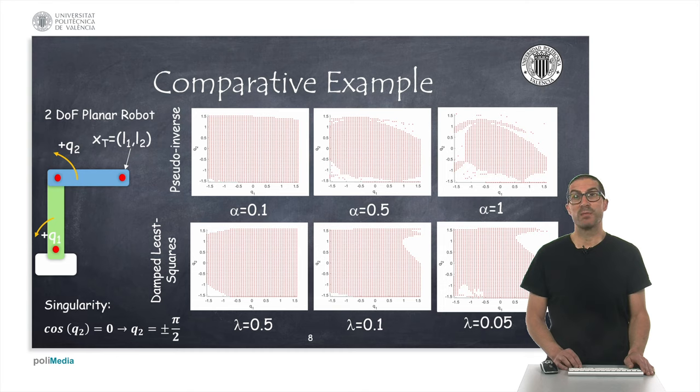However, as it can be appreciated, the damped least squares method provides numerically more stable solutions, particularly for configurations where the initial configuration is at a singularity. I mean, specifically for this robot, these are configurations that correspond to joint two values where they take values half pi or minus half pi.